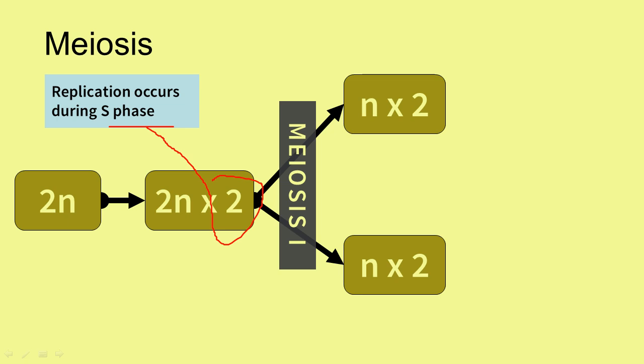The times two represents this replication. After meiosis one, the cells are now haploid, represented by N, but the chromosomes are still replicated, denoted by times two. Haploid means that there is only one of each homologous chromosome in the cell.